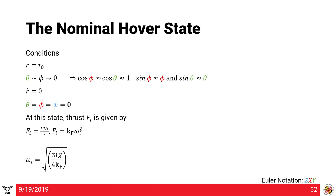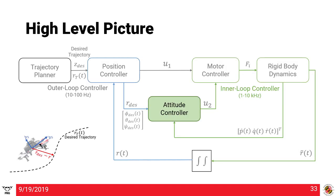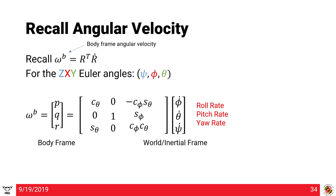Regarding the attitude control: the angular velocity ω_b is defined as R^T · R_dot, which is the body-frame angular velocity. For the Euler angle ZXY convention, the body-rate angular velocity p, q, r equals a rotation matrix (with terms involving cosine and sine of phi and theta) times the roll, pitch, and yaw rates. It's very important to note that p, q, r are defined in the body frame, whereas the roll, pitch, and yaw rates are defined in the world frame.